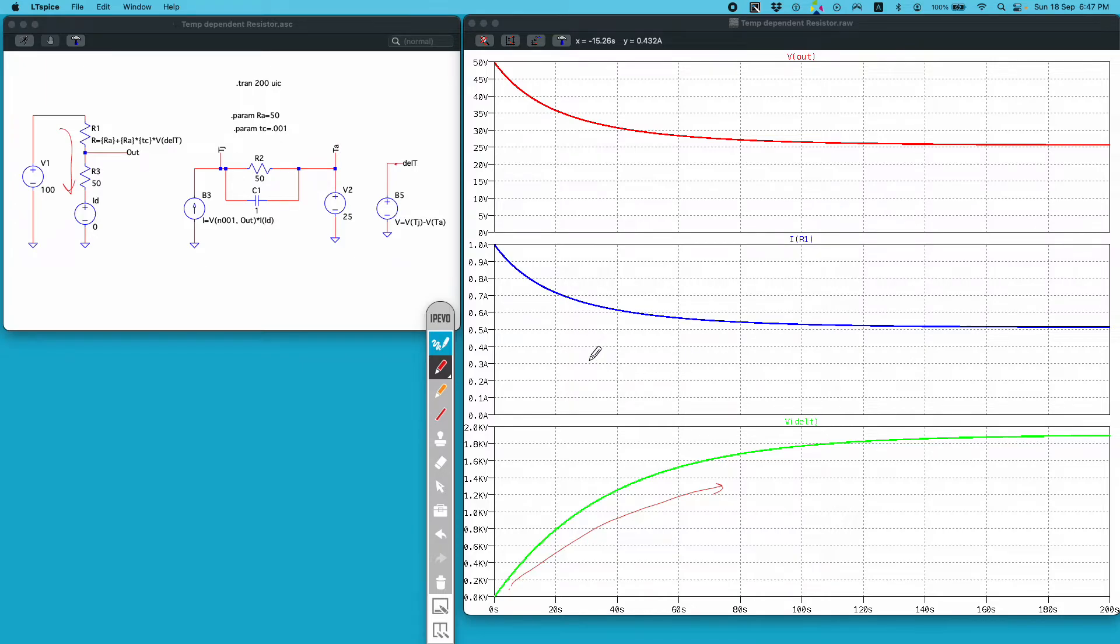In the second plot as the delta T is increasing, this R1 will increase. Obviously this ID value will decrease. We know that ID will be given by V1 divided by R1 plus R3. Since R1 is increasing, ID will decrease and this is what we are getting here.